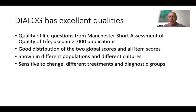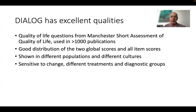Despite not being designed as a psychological test, it has excellent psychometric qualities. This is not surprising because the quality of life items have been taken from the Manchester Short Assessment of Quality of Life, which has already been used in more than a thousand publications — well established, well tested. Both the two global scores as well as every single item score have a good distribution, which is crucial for the psychometric qualities. This has been shown in different populations and different cultures — patients with all sorts of mental disorders but also physical disorders, and on four different continents.